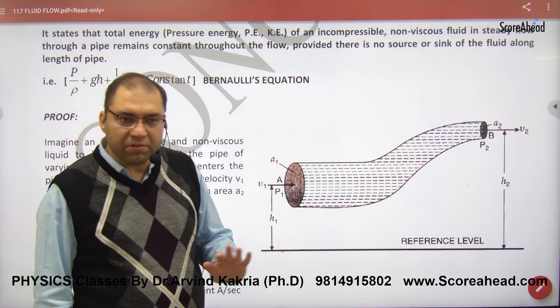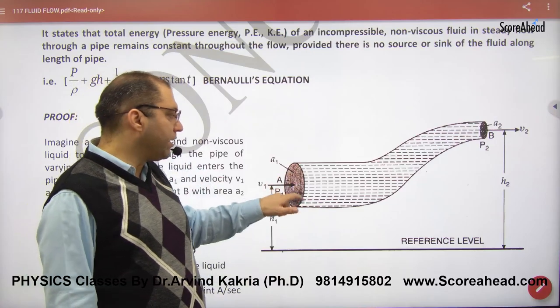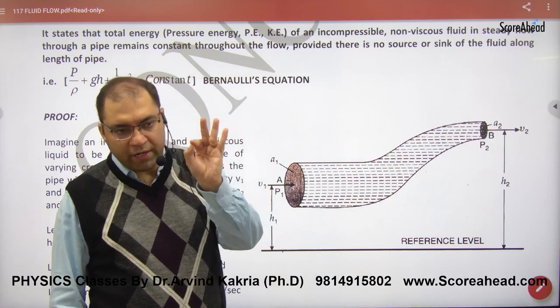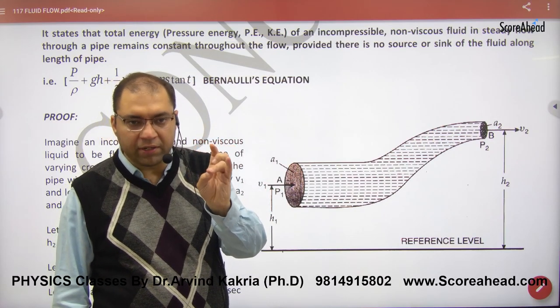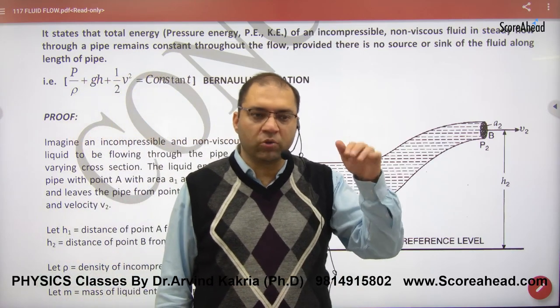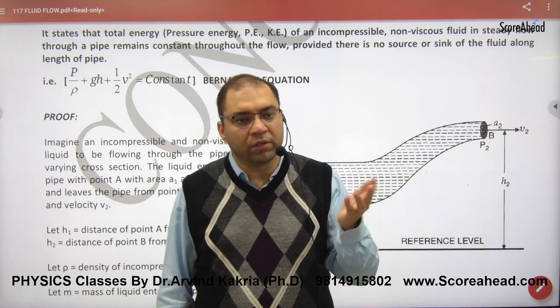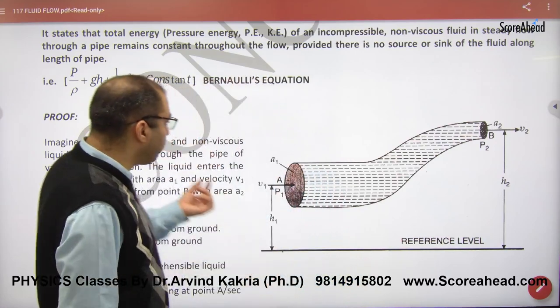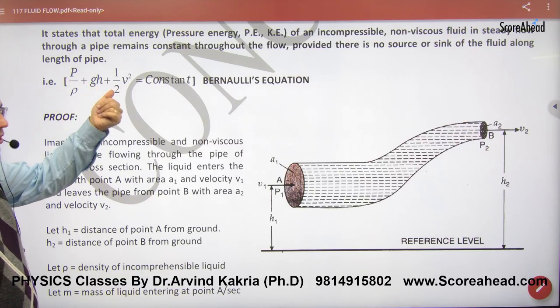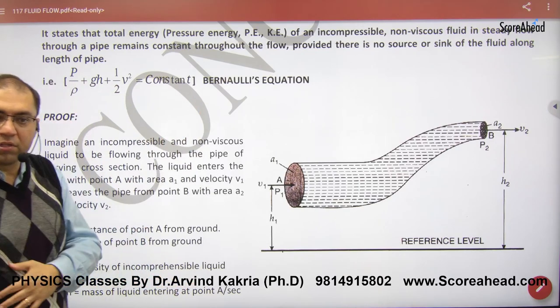So the terms are given. Bernoulli's theorem says that at any point of the pipe, the sum of pressure energy, potential energy, and kinetic energy at any point is the same. The three terms can change but the sum remains the same. So pressure energy per unit mass, potential energy per unit mass, kinetic energy per unit mass, these three point constant.